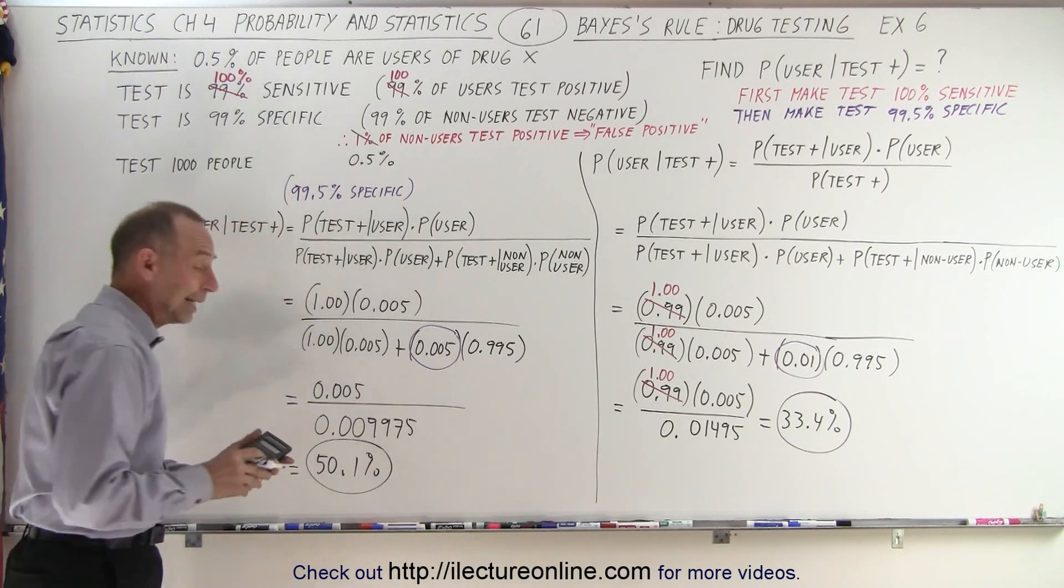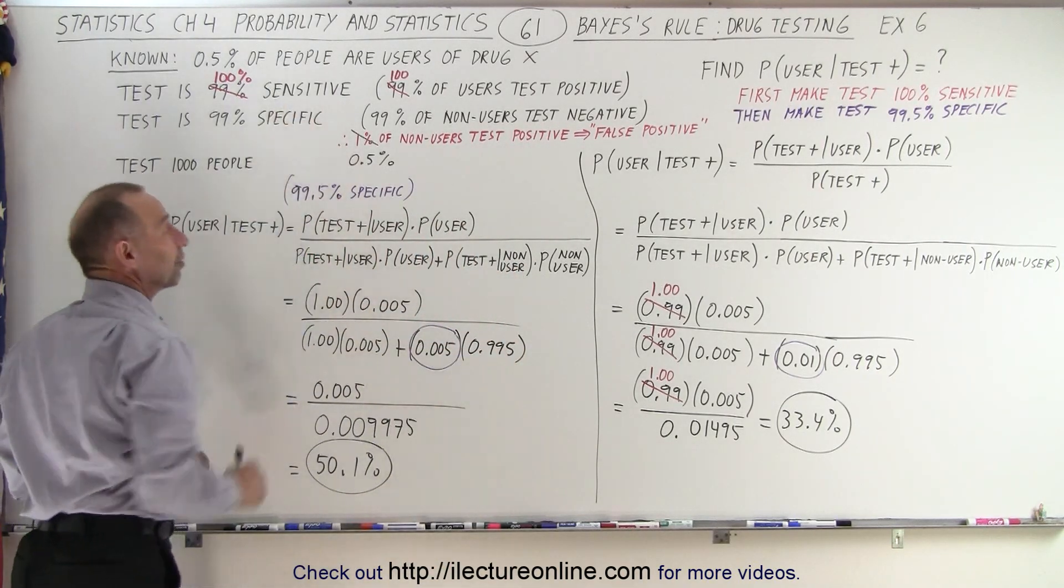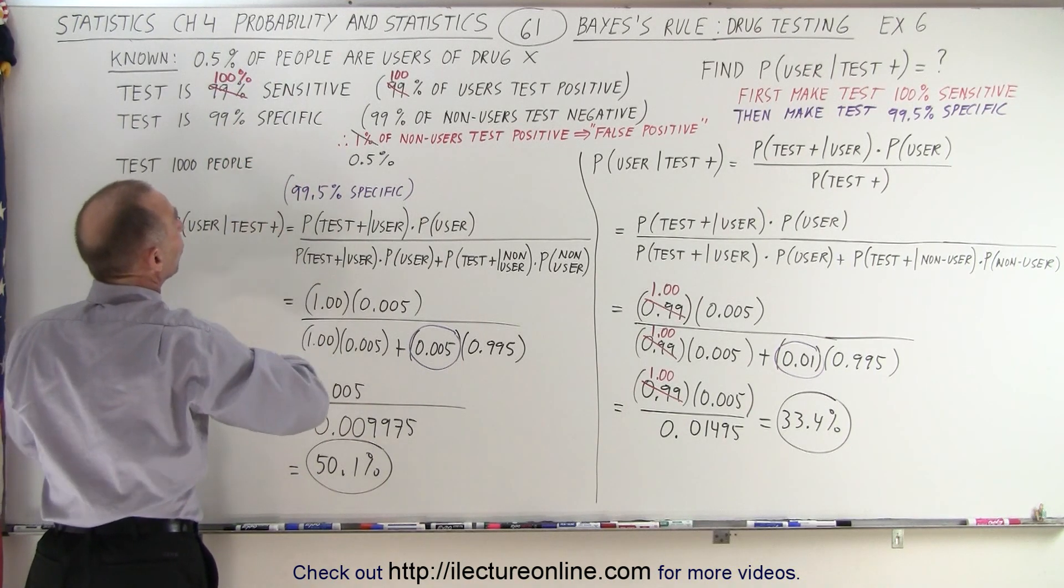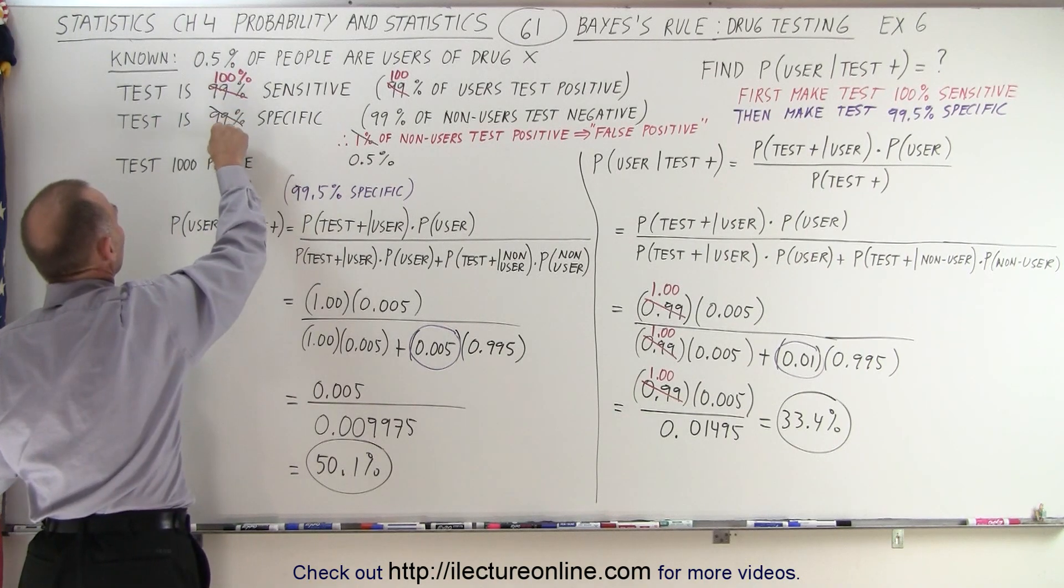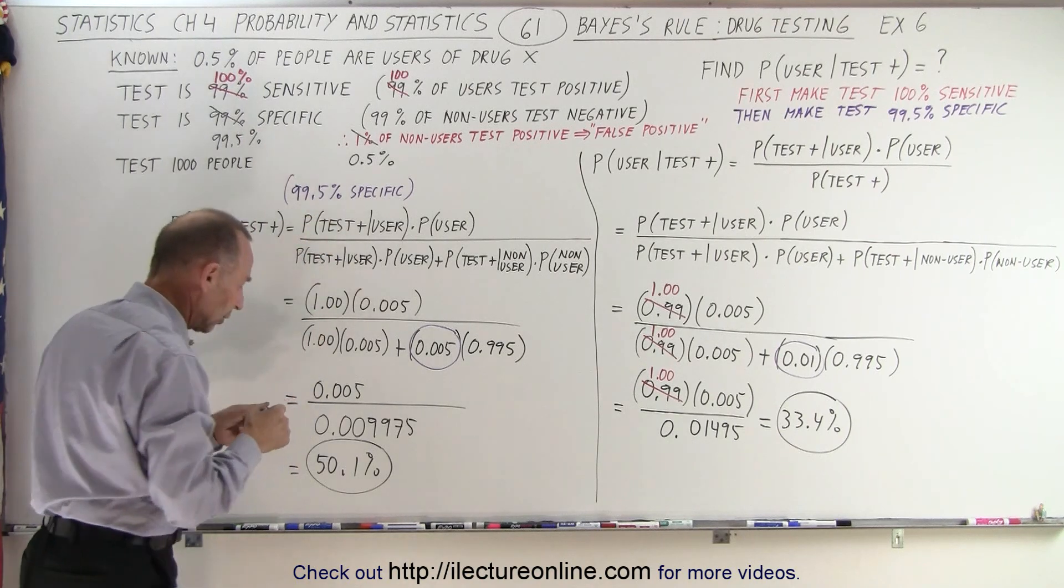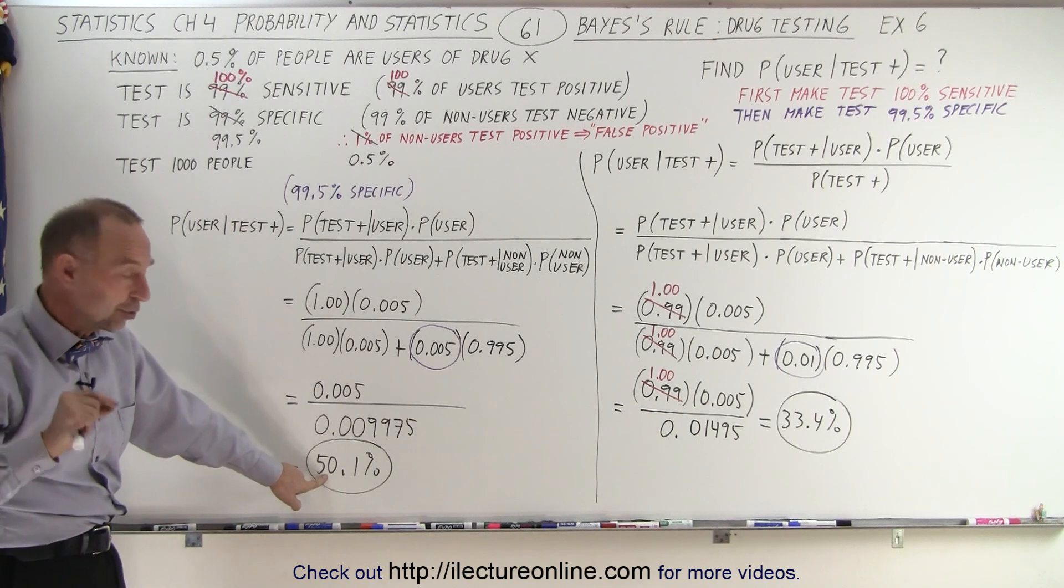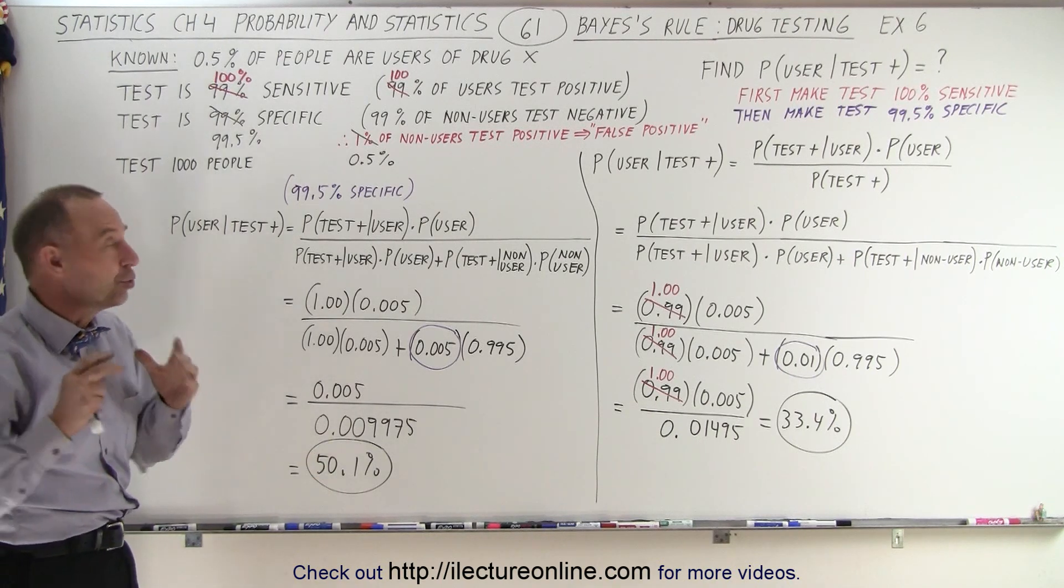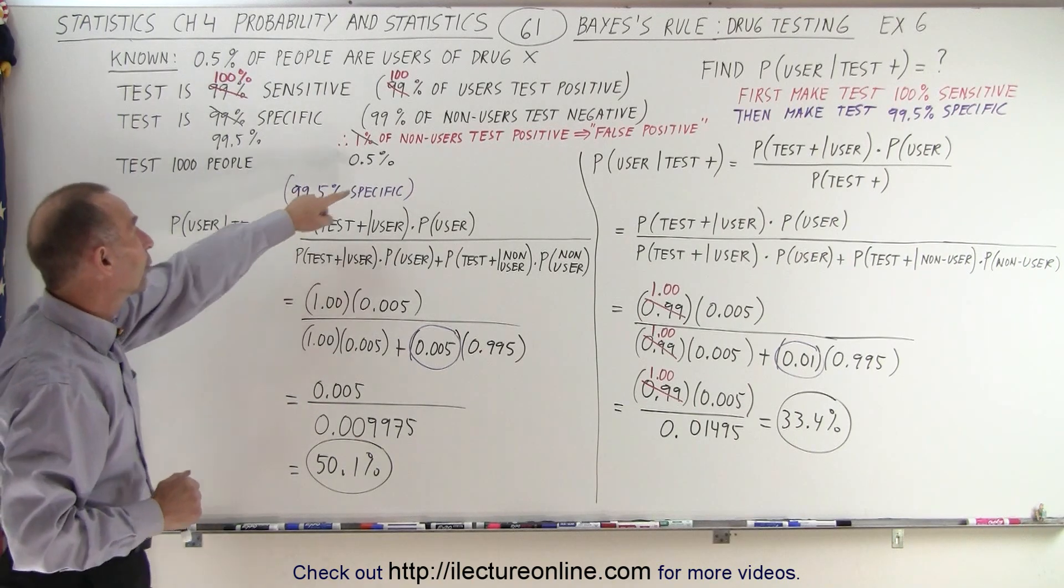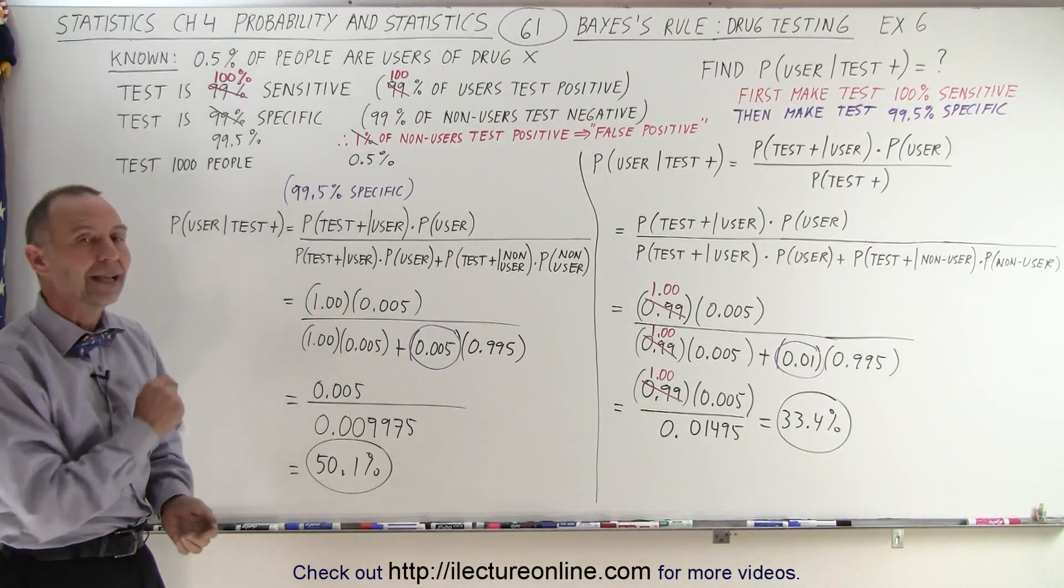So notice that it didn't make a lot of difference by increasing how sensitive the test was, but if the test was more specific from 99% to 99.5%, so now we change this to 99.5%, that changed a whole lot. In other words, now we know that whoever tests positive, 50% of those that test positive are actually users of drug X instead of 33%. So what we need to do is reduce the false positives to get a much better result and that is how this works.